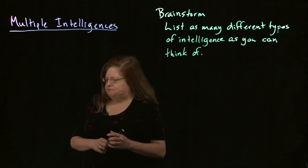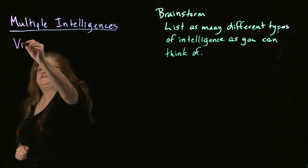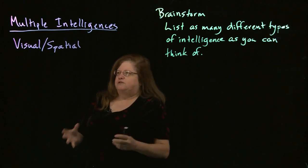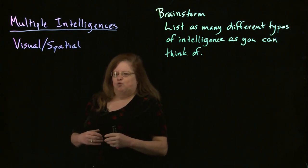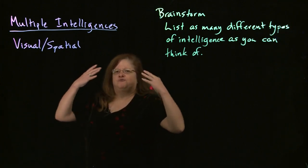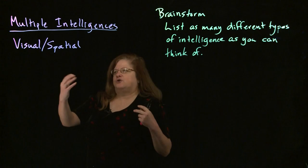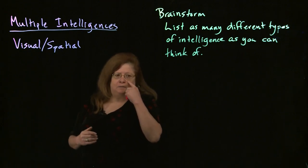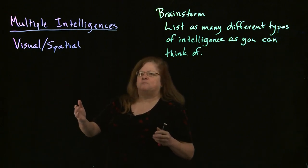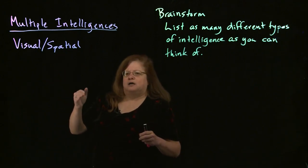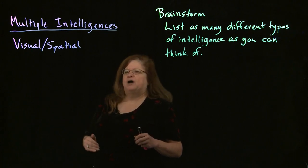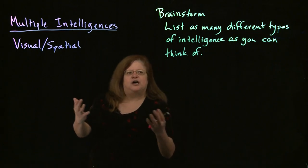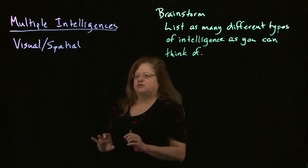Some are traditional and some are not. For example, there's visual-spatial intelligence. This is the type of intelligence where you're good at visualizing things, seeing things. When you're studying, you'll work best if you have some kind of visual aid — a picture or a diagram. For example, if you're learning grammar and this is your strength, diagramming sentences might work really well for you, because you're conceptualizing things based on seeing a picture. Diagramming a sentence is drawing a picture of how the different pieces of the sentence relate to each other.